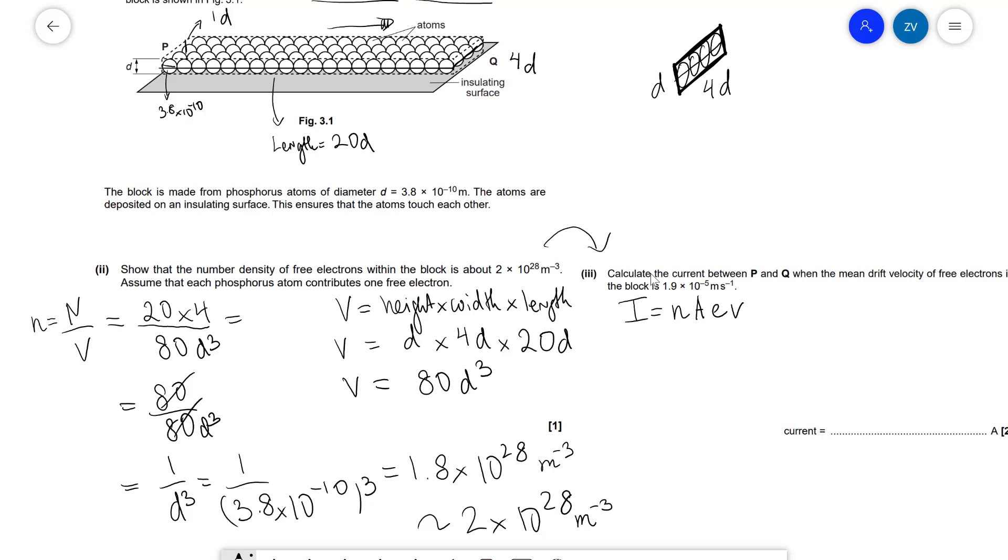So overall the total length of this rectangle is 4d. So this means that our area A will be equal to d multiplied by 4d, which is equal to 4d², where d is equal to 3.8 × 10⁻¹⁰.